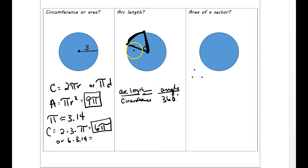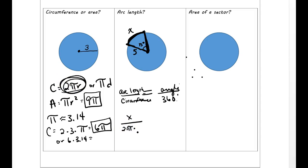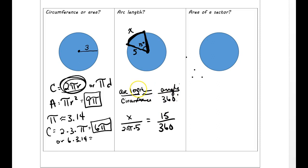So this is your proportion. If I told you the radius is 5 and the angle is 15 degrees, then what you would do is put arc length — which we don't know, call that x — over the circumference, which is 2 times π times 5, equals 15 degrees over 360. Notice this is always going to be a 360, and you're just plugging in values for the other three.